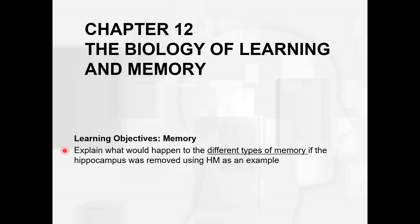In this video we're going to explain what would happen to the different types of memory if the hippocampus was removed, using HM as an example. He had his hippocampus removed in order to prevent seizures. There's also another video that you'll be watching online that will help you understand what would happen to our different types of memory if our hippocampus was removed. This is an important video as you have an assignment that requires you to reflect on this question.